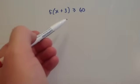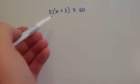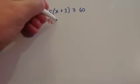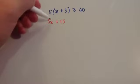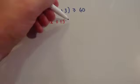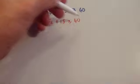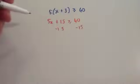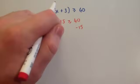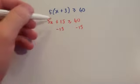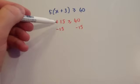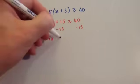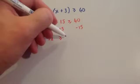So here we've got 5 bracket x plus 3 is bigger than or equal to 40. Whenever you've got a bracket, expand it: you're going to get 5x plus 15 — 5 times x is 5x, 5 times 3 is 15 — is bigger than or equal to 40. You want to get rid of the plus 15, so take away 15 from both sides. That leaves you with 5x is bigger than or equal to 25.